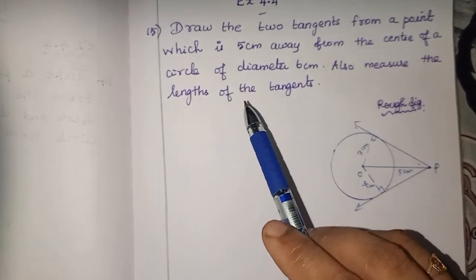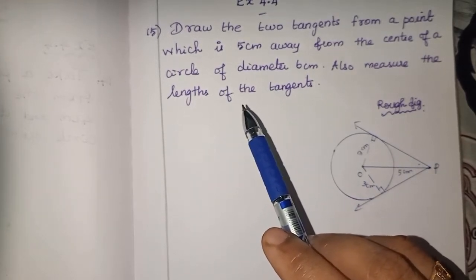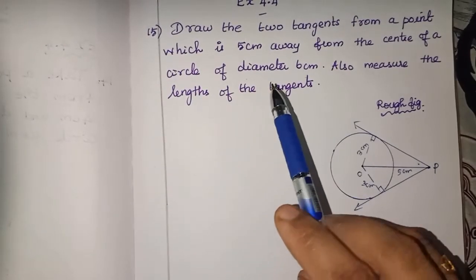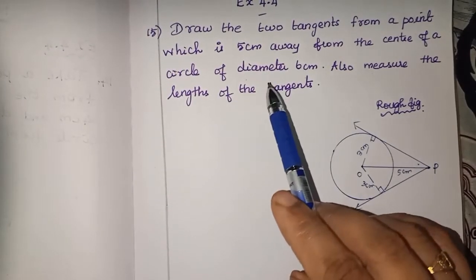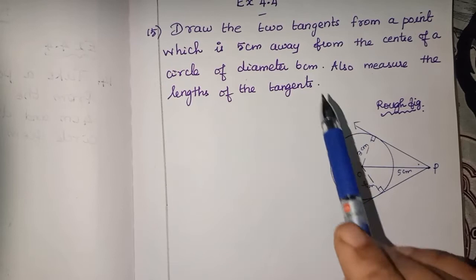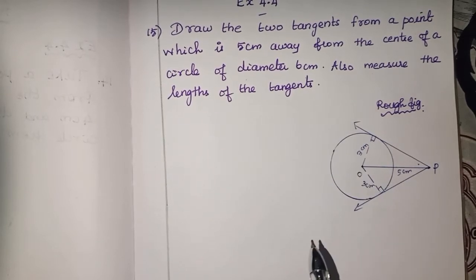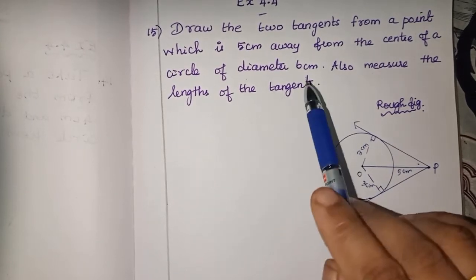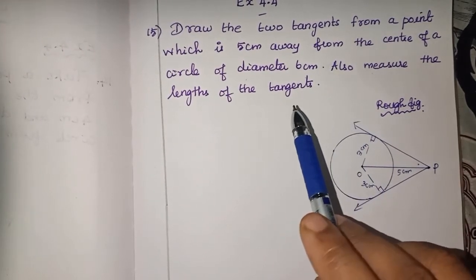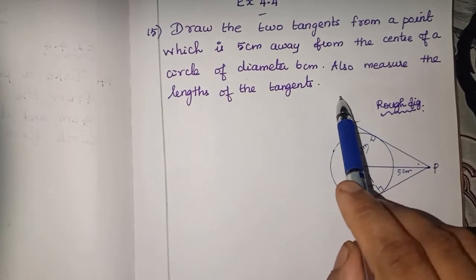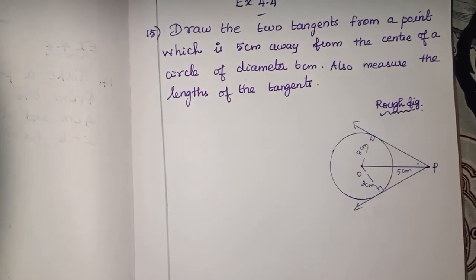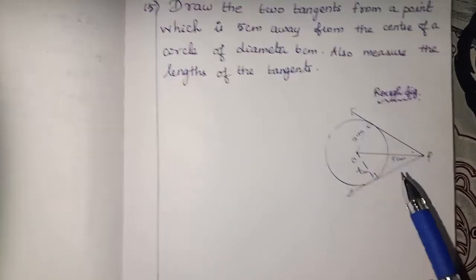No tension. Just read what is given. Diameter is given, so we use the radius to draw a circle. We convert the diameter to radius. Also, we need to measure the length of the tangents. So now the rough figure is going to be done.